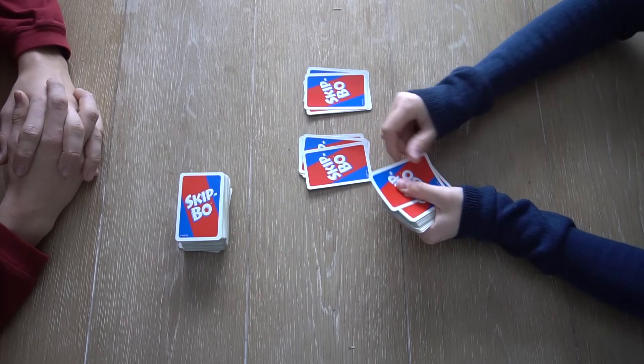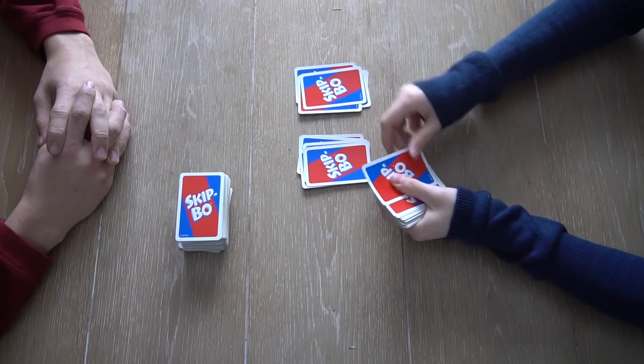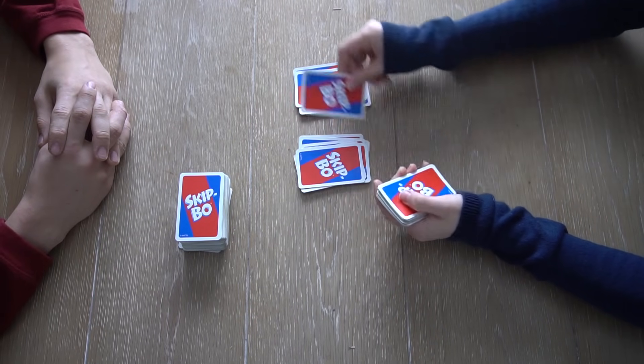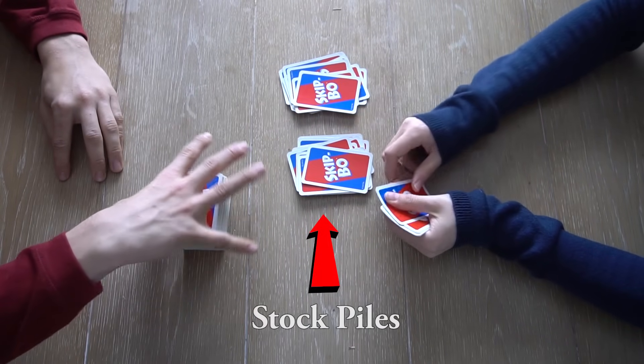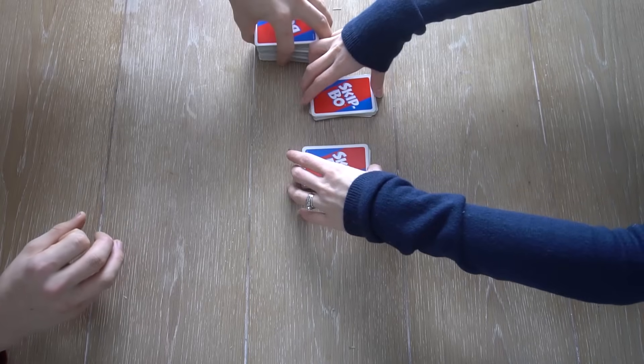Then deal out 15, 20, or 30 cards to each player depending on how long of a game you want to play. These decks remain face down, they will be your stockpiles. The remaining cards will be your draw pile.